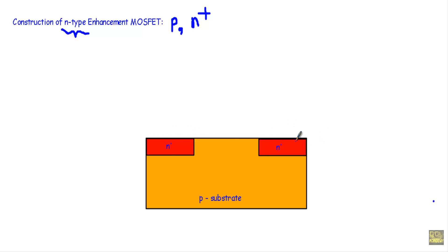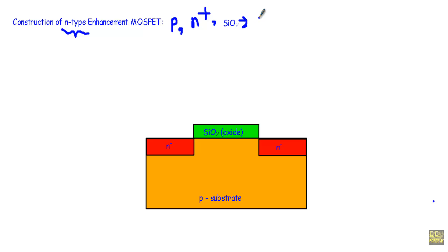After taking this n-type heavily doped region, we deposit an oxide layer on top of the p-type substrate. We usually take silicon dioxide as the insulating or dielectric layer. This silicon dioxide has a dielectric constant of 9. On top of the silicon dioxide structure we take a metallic layer which is known as an ohmic contact.